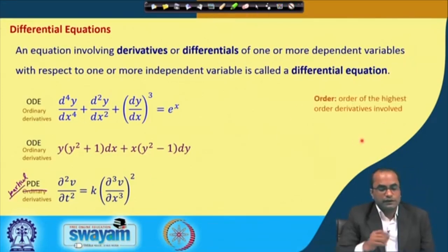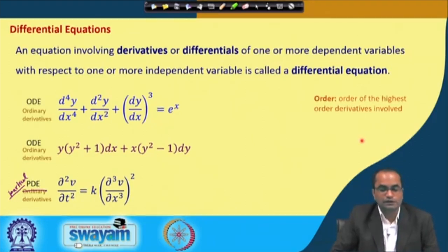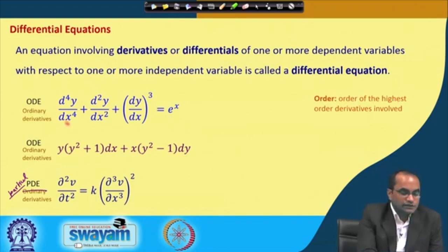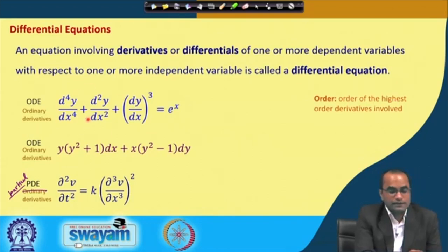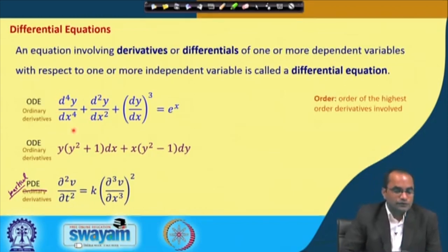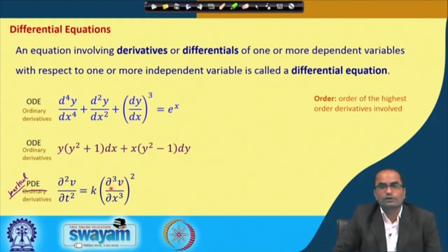There are other classifications, such as the order of the differential equation. The order is nothing but the order of the highest order derivative involved. For example, in the first equation the highest order derivative is 4, so the order of this equation will be 4. Similarly we will talk about the order of the other two equations.